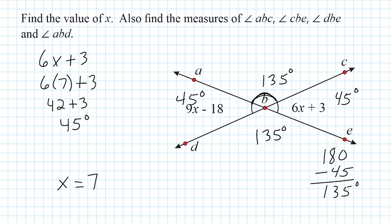One thing we should note is that if you add all four angles going all the way around in a circle, we should have an angle sum of 360 degrees. If we add 135 and 135, that gives us 270. If we add 45 and 45, that's 90. And 270 plus 90 does in fact give us a total of 360 degrees.